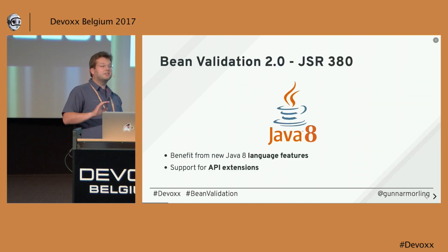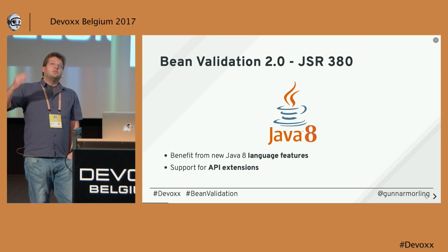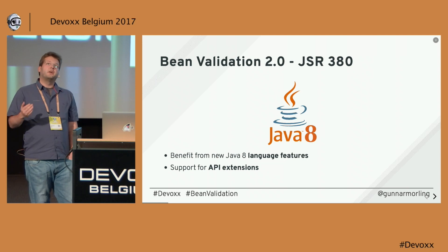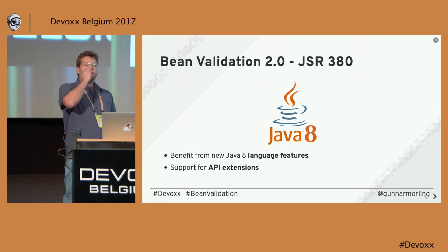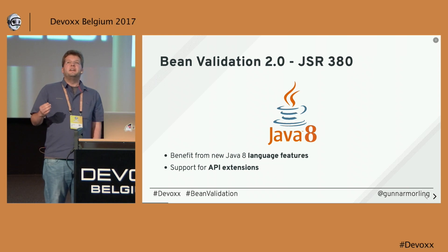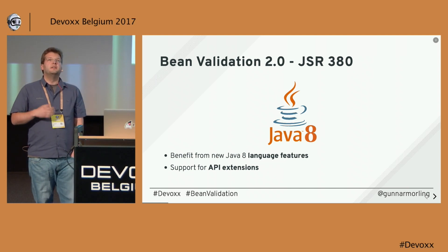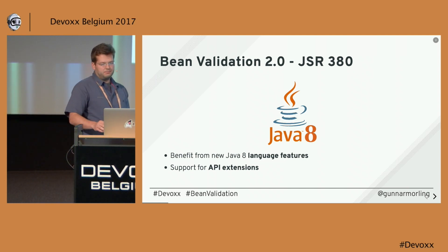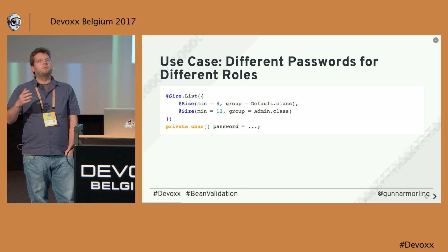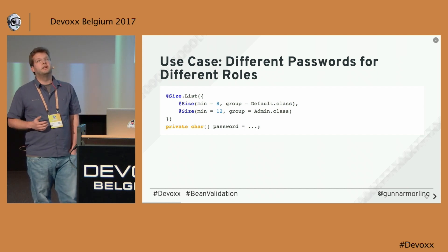Bean Validation 2.0 — what is it about? It's about supporting Java 8 and taking advantage of Java 8 for the purposes of validation. We created a new JSR 380, and if you wonder why it is a new major version 2.0, the reason is that we found we cannot take advantage of Java 8 in a way that would allow using this new version with earlier Java versions. So we made it Java 8 only. I'll present new features in the form of use cases you'd typically encounter in validation.